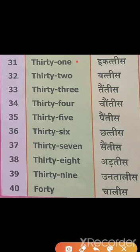THIRTY ONE 31, THIRTY TWO 32, THIRTY THREE 33, THIRTY FOUR 34, THIRTY FIVE 35, THIRTY SIX 36, THIRTY SEVEN 37, THIRTY EIGHT 38, THIRTY NINE 39, FORTY 40.